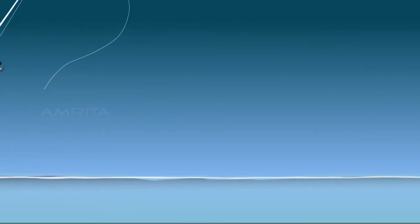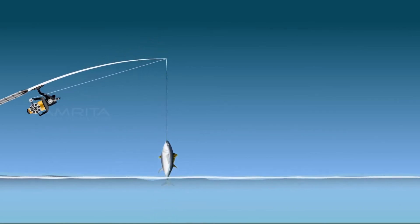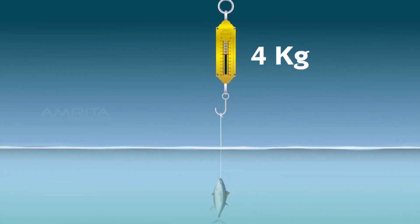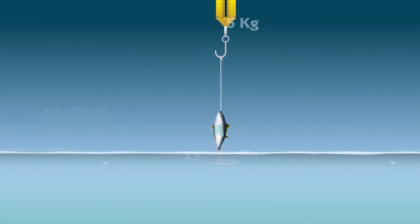We see the uses of this principle in our daily lives. Ever caught a fish with a fishing line? When pulling the line, you would have felt the weight of the fish in water is lighter than when the fish has surfaced. Say the weight of the fish in water is 4 kilos, its approximate weight outside would be 5 kilos.